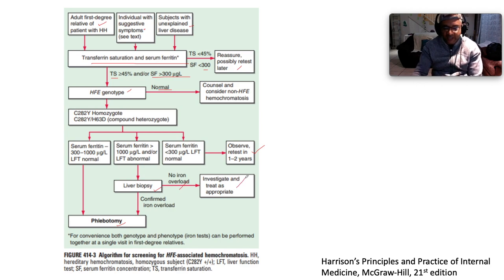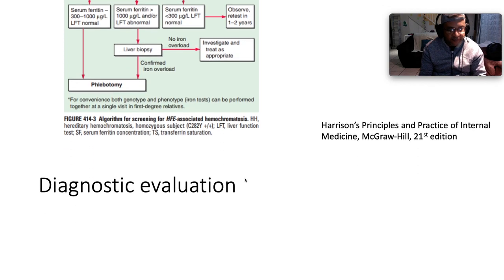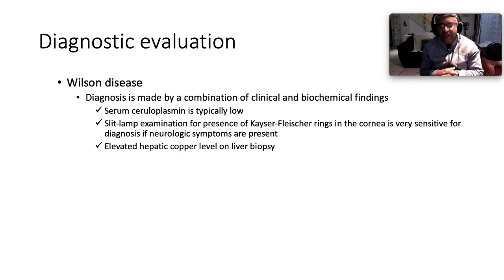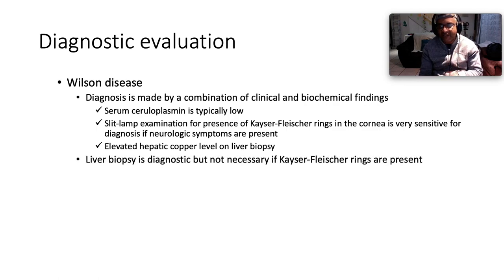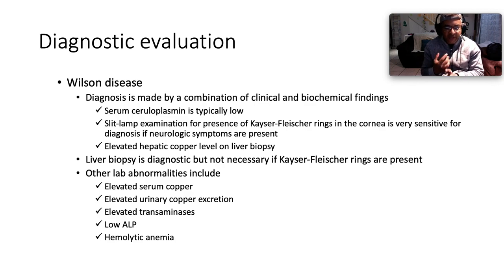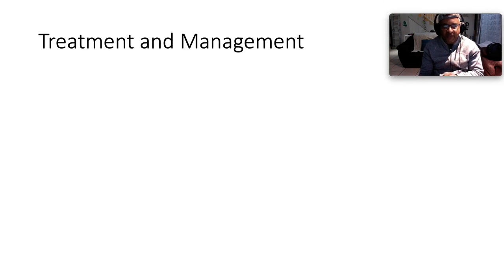For Wilson disease, diagnosis is made by a combination of clinical and biochemical findings. Serum ceruloplasmin is typically low; slit-lamp examination for Kayser-Fleischer rings is very sensitive. If the patient also has concomitant neurology and elevated hepatic copper on liver biopsy, that is diagnostic. However, liver biopsy is not necessary if you see Kayser-Fleischer rings combined with neurological sequelae and hemolysis with cirrhosis. Other lab findings include elevated serum copper, elevated urinary copper, elevated transaminases, low alkaline phosphatase, and hemolytic anemia.